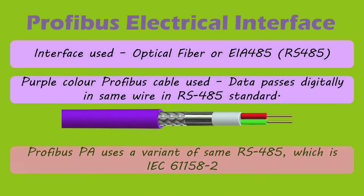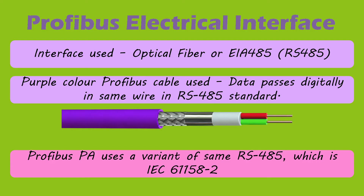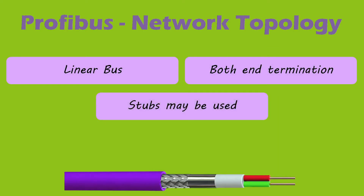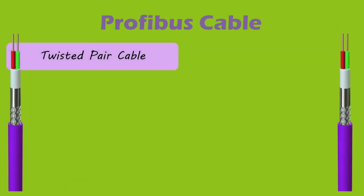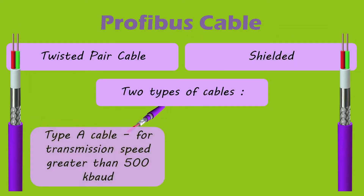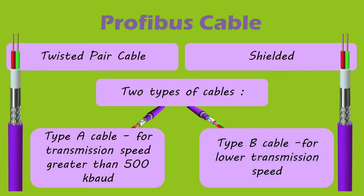Regarding the Profibus electrical interface: Profibus uses fiber optic or EIA-485, also known as RS-485, as its electrical interface. Normally, a purple colored wire is seen in use in Profibus networks, passing information through digital communication using the RS-485 standard. Profibus PA uses a variant called IEC 61158-2 for its electrical interface. The network topology used in Profibus is a linear bus terminated at both ends, with stubs — branch lines from the main line — used in some applications.